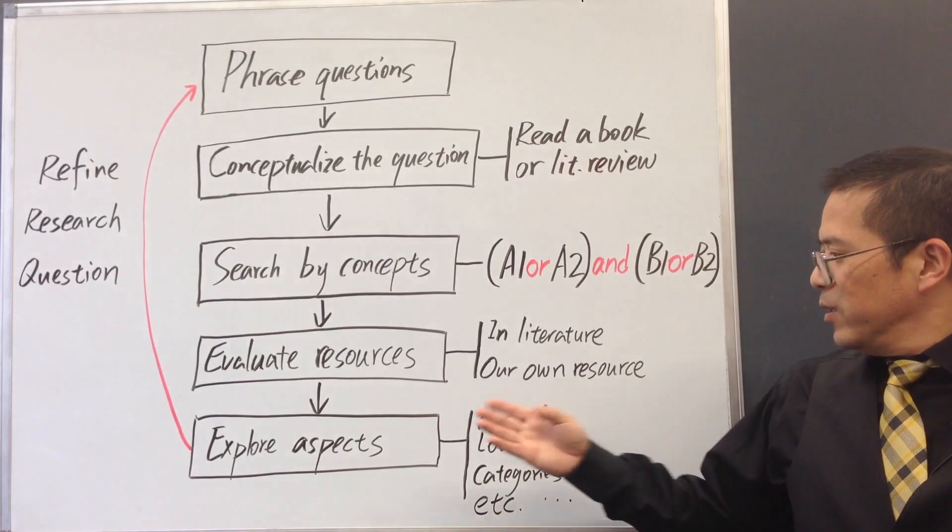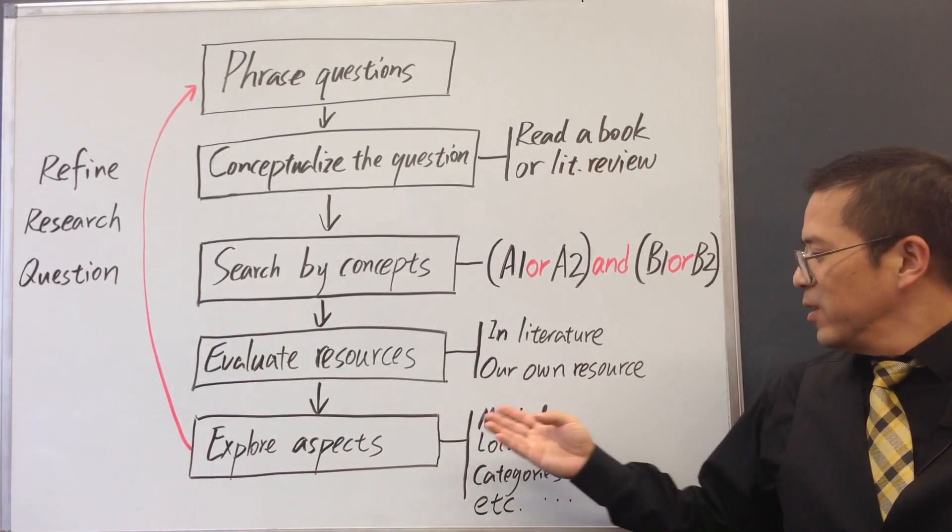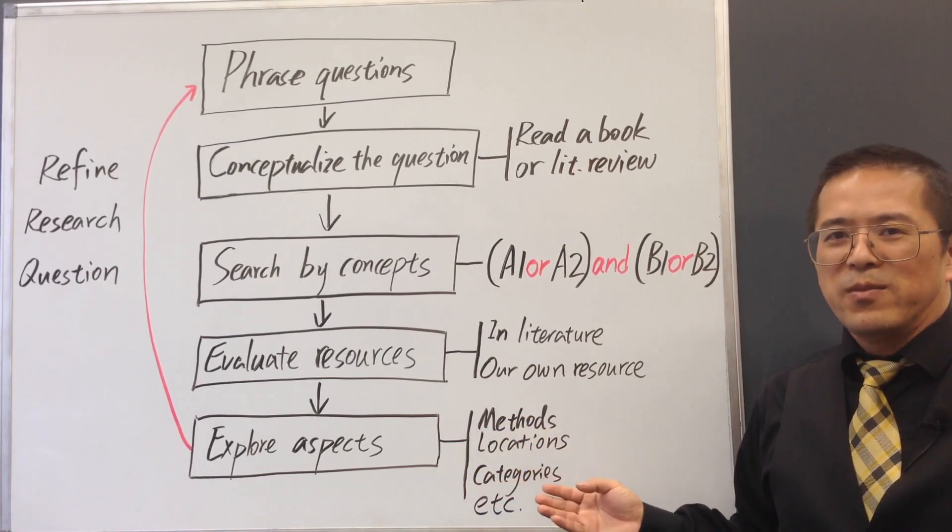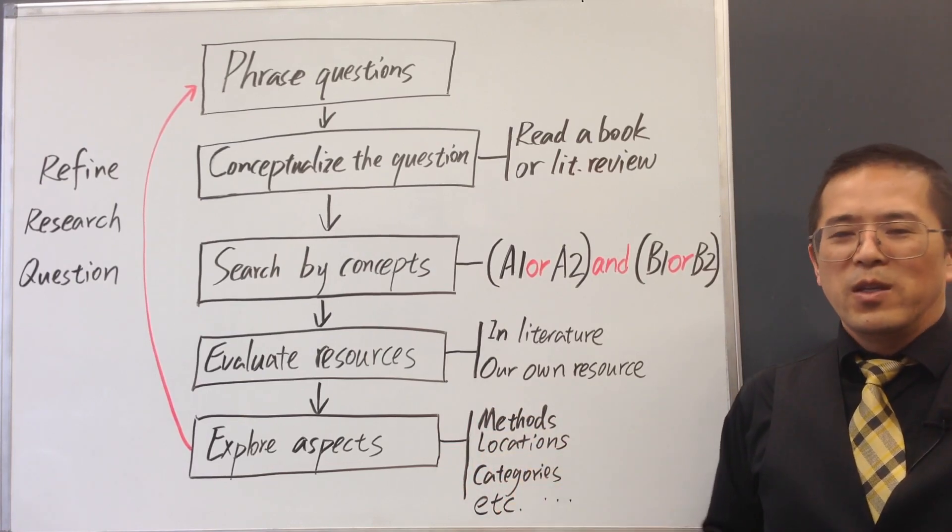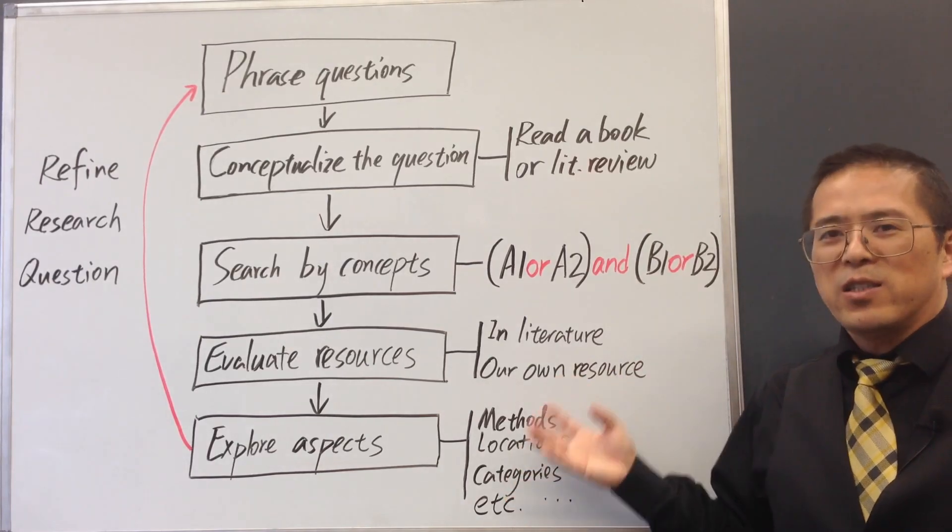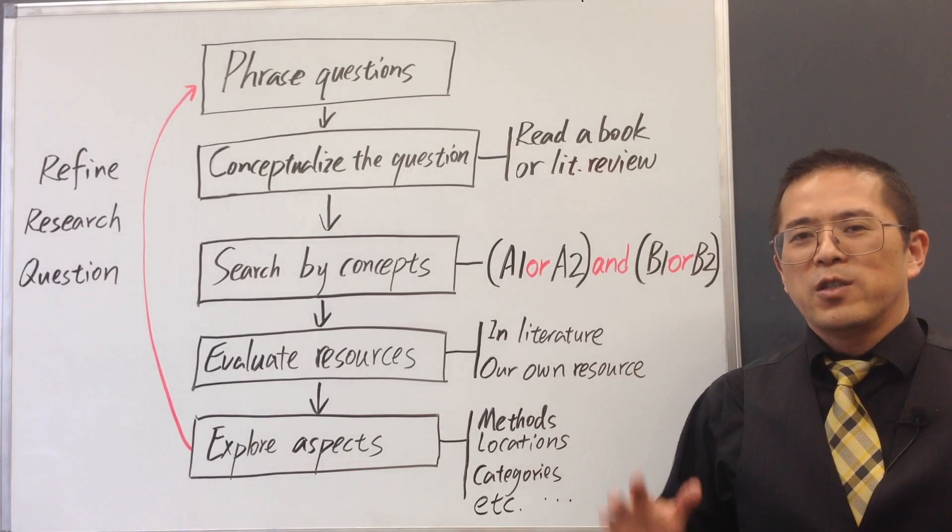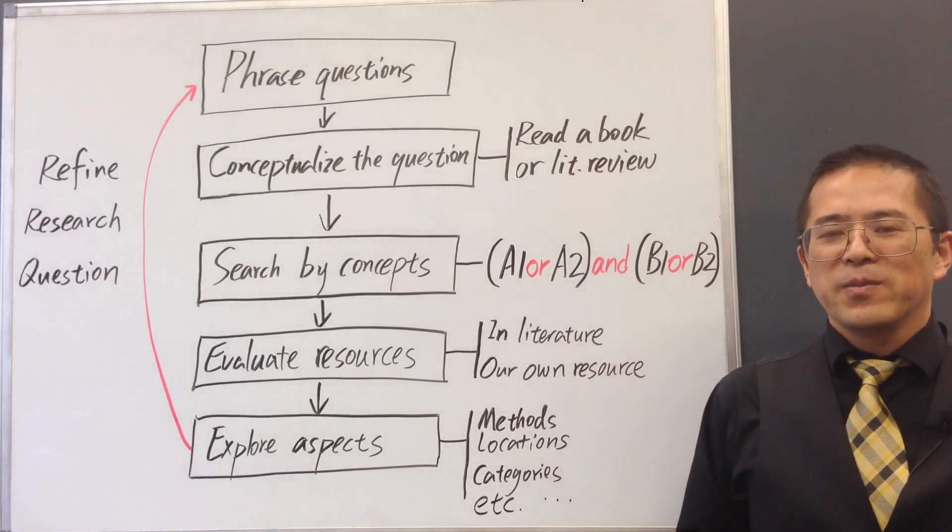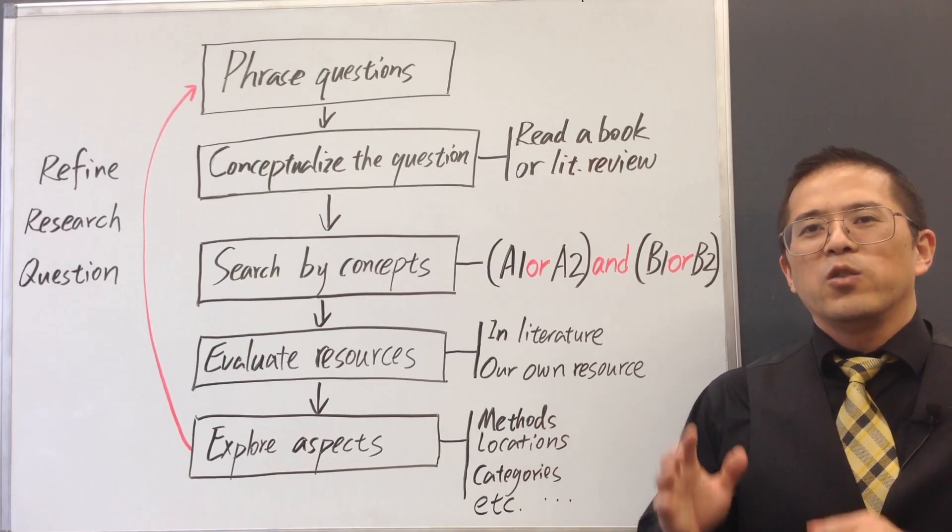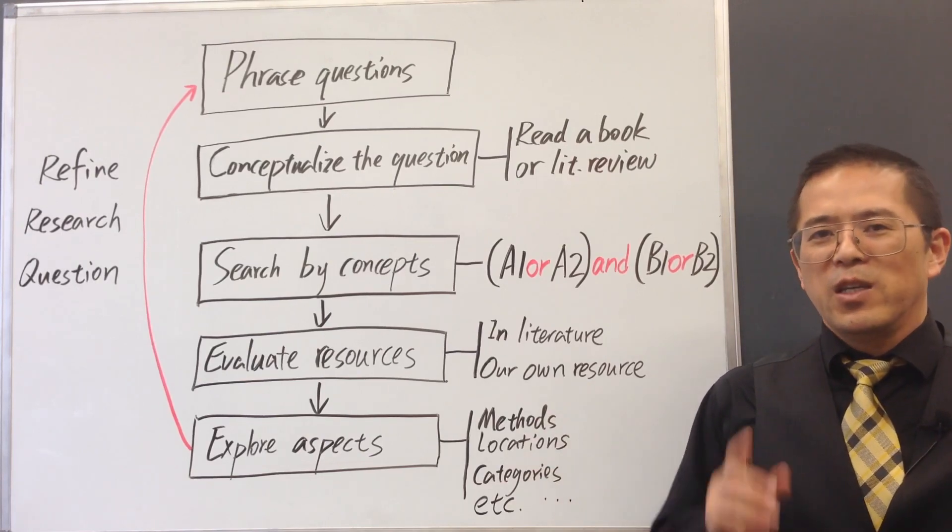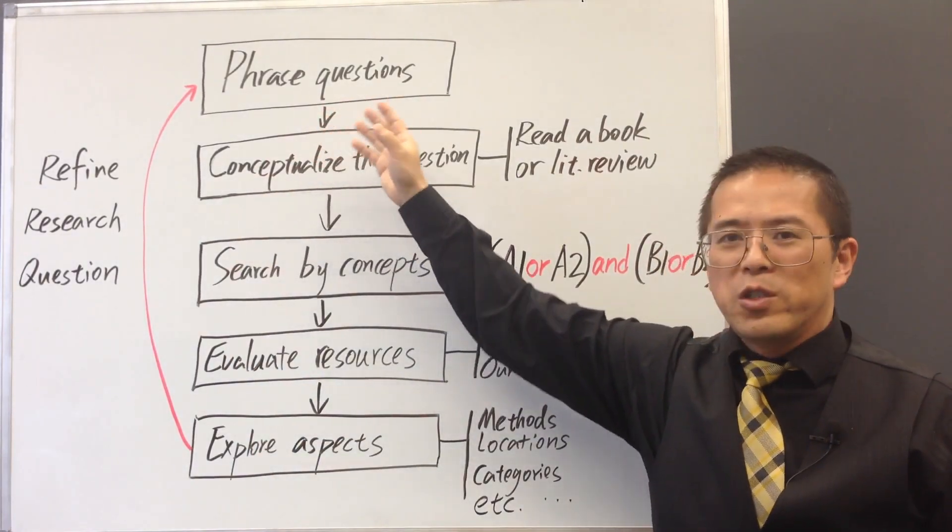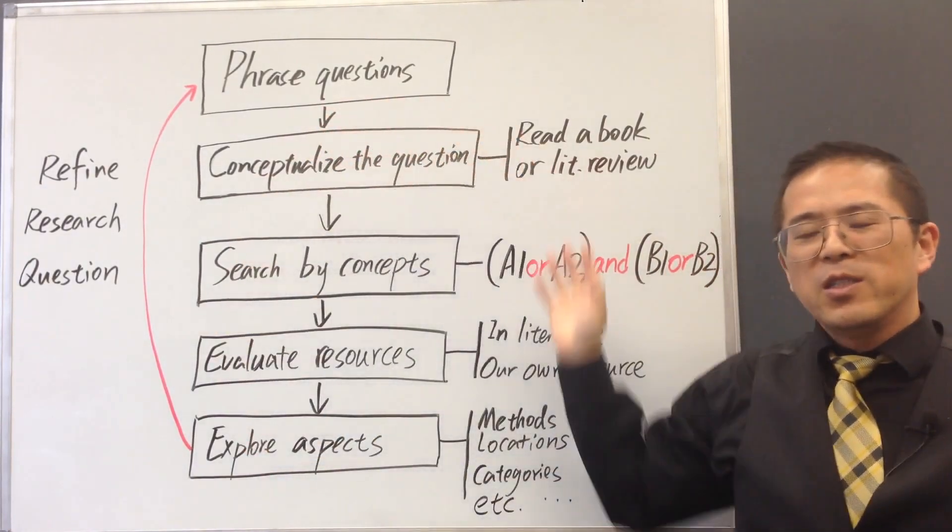For example, different methods, geographic locations, categories of processes, etc. Then we will have opportunities to use these aspects to further focus our topic. Also, we may consider the comments on future research in recent papers. If needed, we may go back to refine our research questions and repeat the cycle.